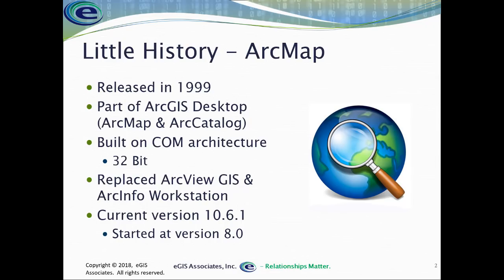We're going to start with a little history and look at where these things came from. ArcMap, our tried-and-true application, was first released in 1999. It's very hard to believe that application is almost 20 years old. It's part of a larger package called ArcGIS Desktop, which includes ArcMap and ArcCatalog. Being created in the late 90s, it was built on a COM architecture, which means it's limited to 32 bits. All new development for ArcMap has essentially stopped — Esri is only doing bug fixes and patches to keep it running on the latest version of Windows.